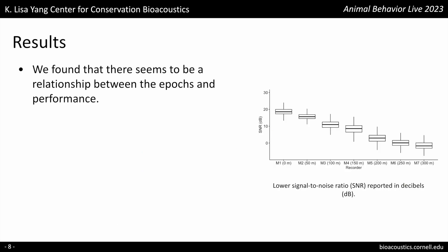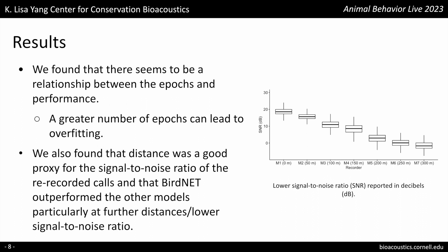We also found that the number of epochs can influence how much the model learns from the data. Generally speaking, if we train a new model with transfer learning, we need fewer epochs. Too many epochs can cause overfitting, which is when a model performs well on training and validation data but poorly on the test data. We can see that for VGG19, 20 epochs can lead to overfitting. We also found that distance was a good proxy for the signal-to-noise ratio of the re-recorded calls, and that BirdNET outperformed the other models, particularly at further distances and lower signal-to-noise ratio.